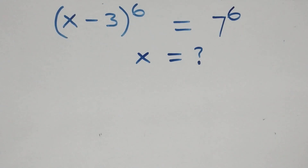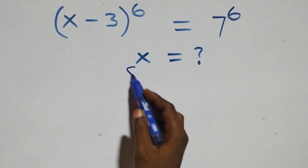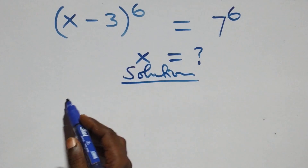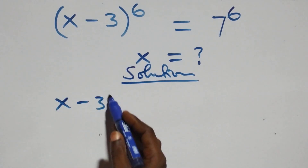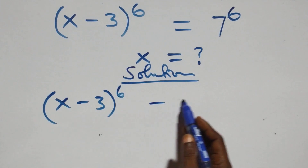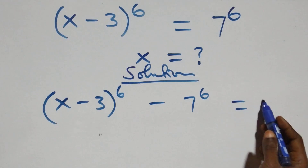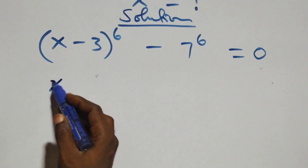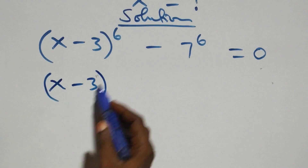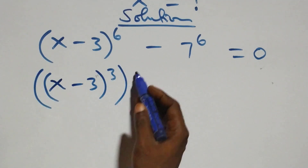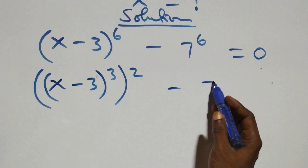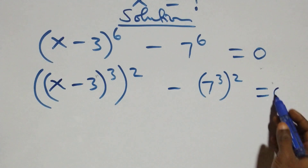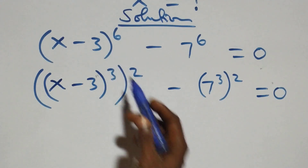Hello, you are welcome. We solve this exponential equation. We take 7 raised to the power 6 to the left-hand side, so this becomes (x minus 3) raised to the power 6 minus 7 raised to the power 6, equals 0. Next, we can write this as (x minus 3)^3 raised to the power 2, minus (7^3) raised to the power 2, equals 0, since 2 times 3 gives us 6.